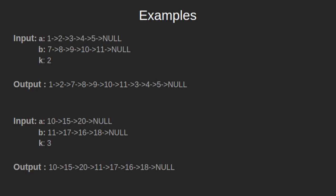Let's see some examples to demonstrate the above problem. In the first example, we have the first linked list as 1, 2, 3, 4, 5, the second linked list as 7, 8, 9, 10, 11, and k is given as 2. After inserting the second linked list at the second position of the first linked list, we get the linked list as 1, 2, 7, 8, 9, 10, 11, 3, 4, 5.